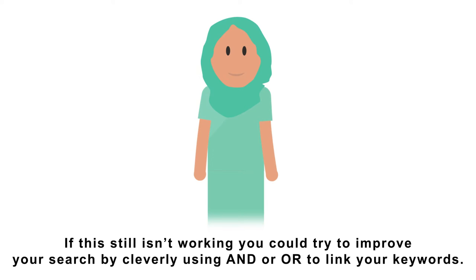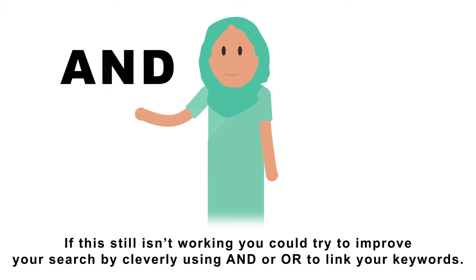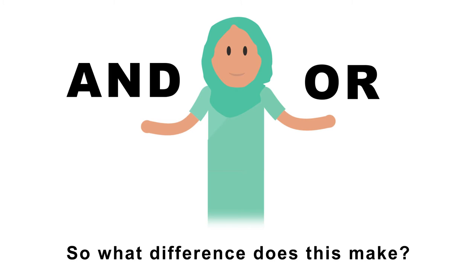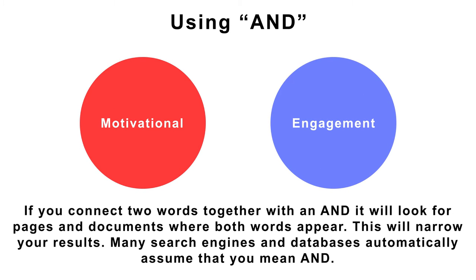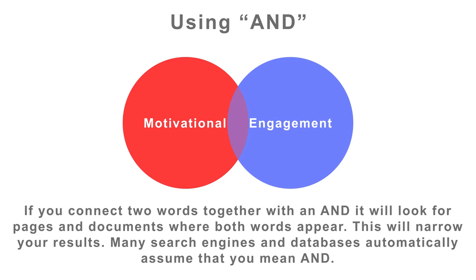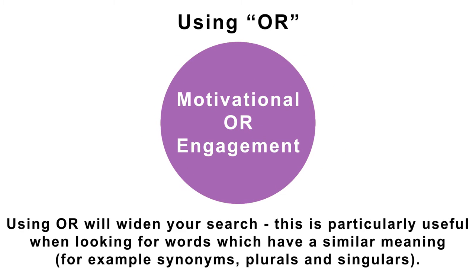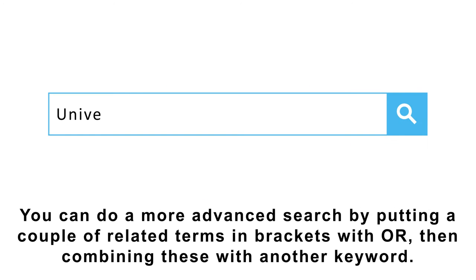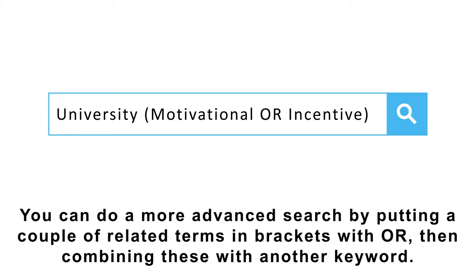If this still isn't working, you could try to improve your search by cleverly using AND or OR to link your keywords. If you connect two words together with AND, it will look for pages and documents where both words appear — this will narrow your results. Many search engines and databases automatically assume that you mean AND. Using OR will widen your search, which is particularly useful when looking for words which have a similar meaning, for example synonyms, plurals and singulars. You can do a more advanced search by putting a couple of related terms in brackets with OR and then combining these with another keyword.